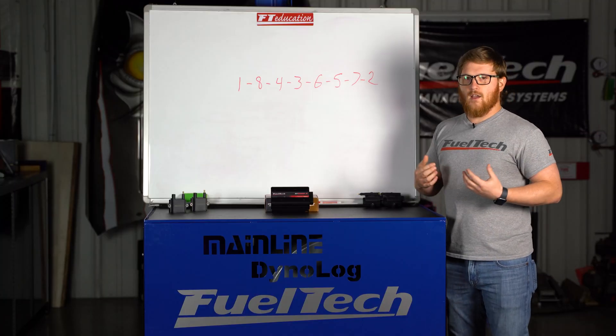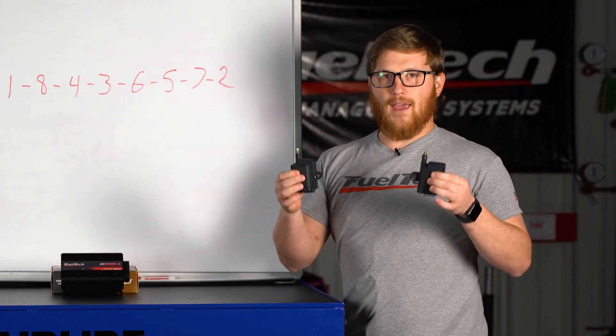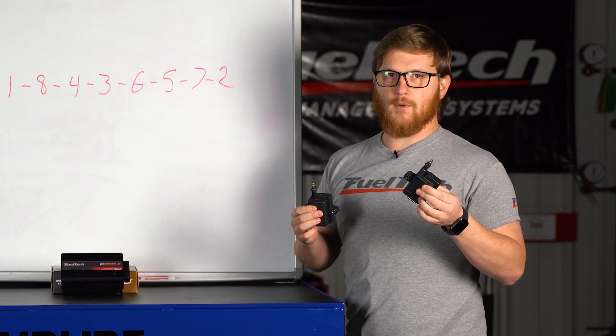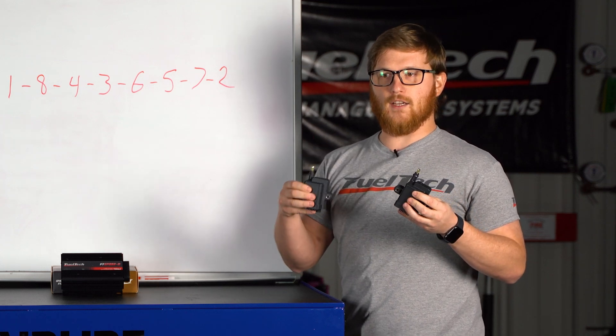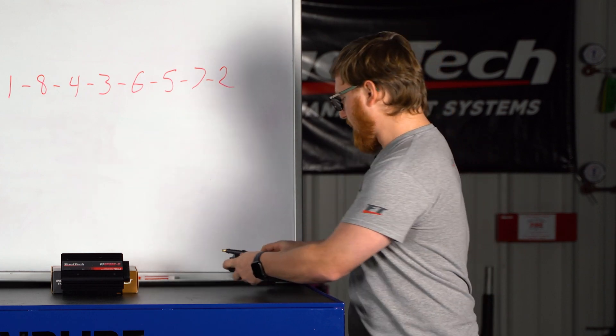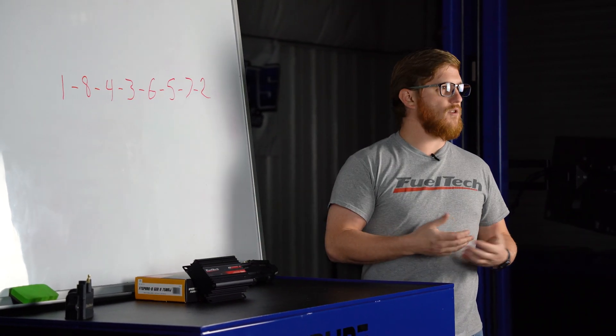Next we have wasted spark, and wasted spark is going to take two coils and fire them at the same time. One of them will be firing when it should be firing to light off the mixture. The other one will be firing on the exhaust stroke and that spark is what we call wasted. That's why it's called wasted spark. The second spark that's happening at the same time is not being used for anything.